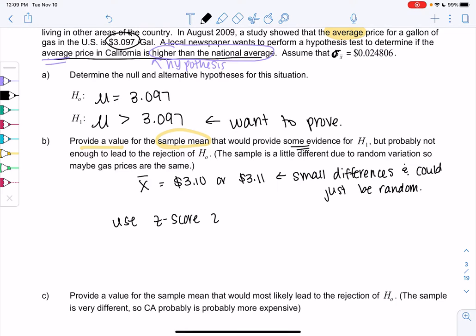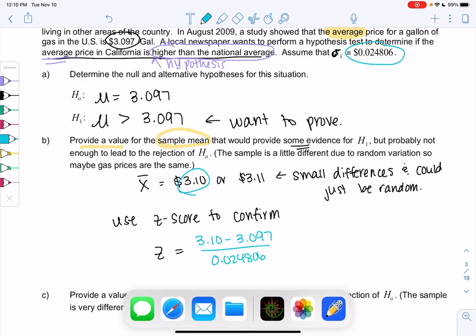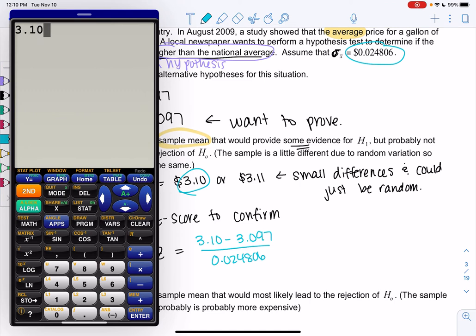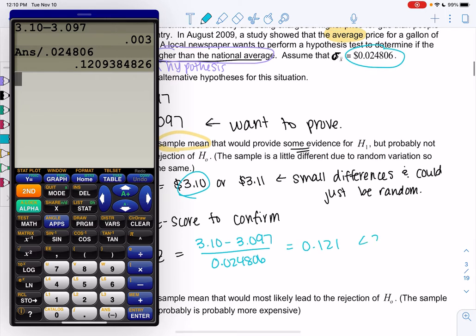So same thing as last video, but we have to come up with the value on our own. And if you confirm and the z-score doesn't work, then pick a different value. So let's go with $3.10. We'll take away the average of $3.097 and divide by the standard deviation of 0.024806. And then go ahead and calculate that, or you can watch me. So subtract and then divide.